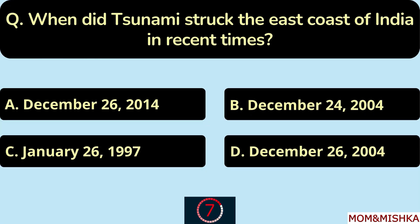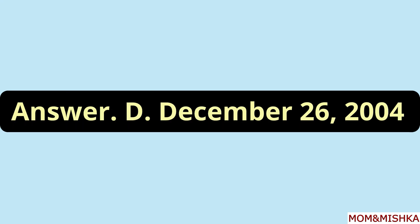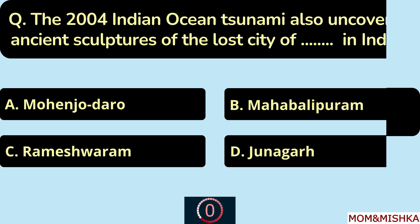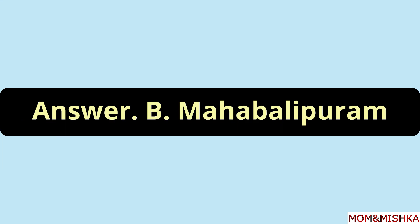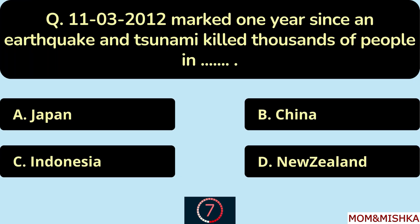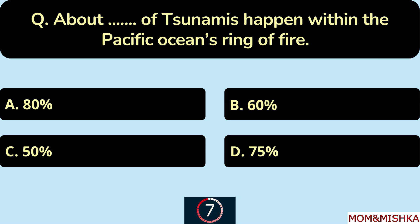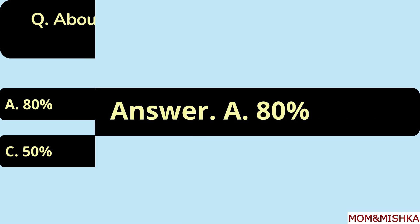A tsunami struck the east coast of India on December 26, 2004 — option D. The 2004 Indian Ocean Tsunami also uncovered ancient sculptures of the lost city in India — option D. The earthquake and tsunami on 11 March 2011 killed thousands of people in Japan — option A. About 80% of tsunamis happen within the Pacific Ocean's Ring of Fire — option A.